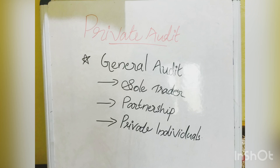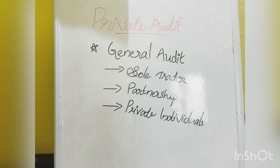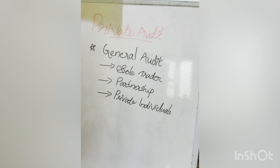Private audit is also known as general audit. It is not compulsory to audit the accounts of private enterprises but it is left to the discretion of the owner. The private business houses have their own professional arrangements for audit and to protect the interest of owners. There are three types of such institutions: sole trader, partnership and private individuals. Now we can discuss these types in detail.